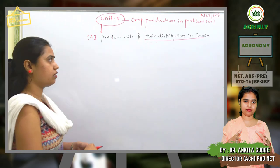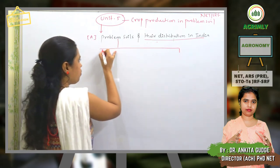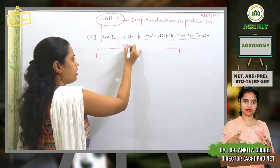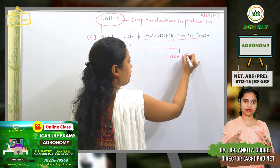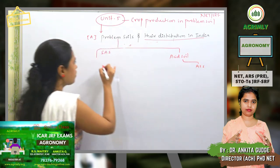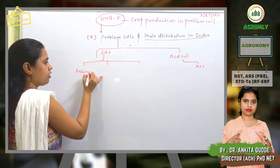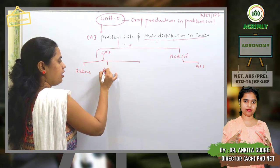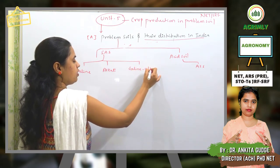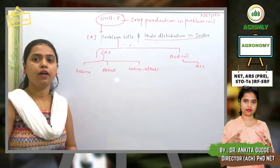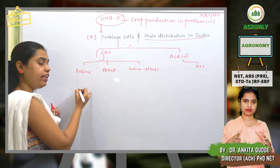Soil. The basic problem of soil is acid sulfate soil and acid soil. The types include saline and alkali soils. The basic characteristic of saline soil is a high accumulation of salt.